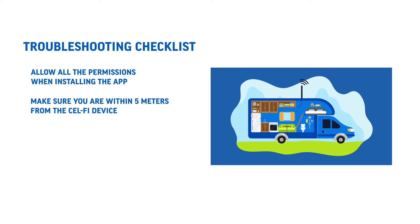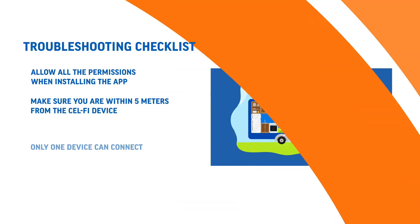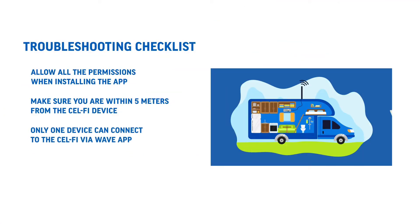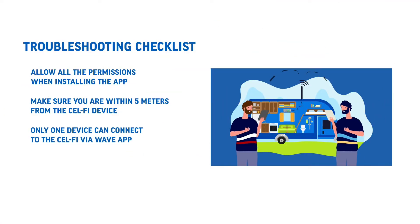Second, make sure you are within five meters from the cell-fi device, and if it's a cell-fi Pro model then you need to be close to the coverage unit. Number three, only one device can connect to the cell-fi via the Wave app. So if you have one phone connected via the Wave app, a second phone trying to connect won't work — only one app can connect at a time.